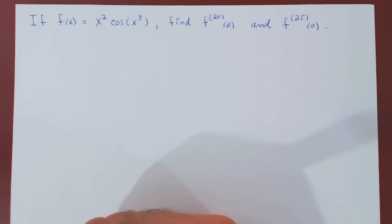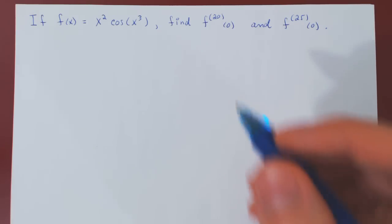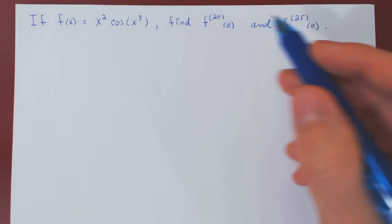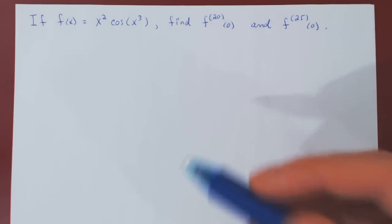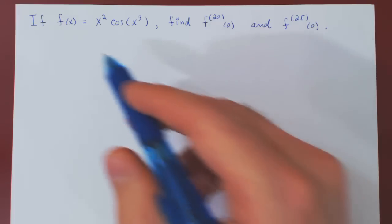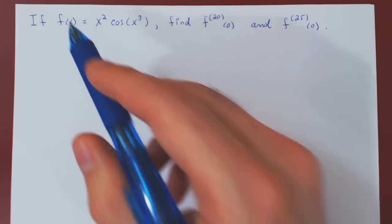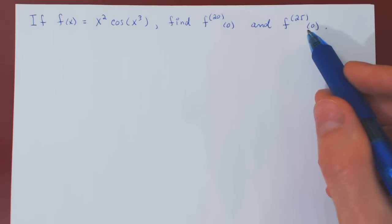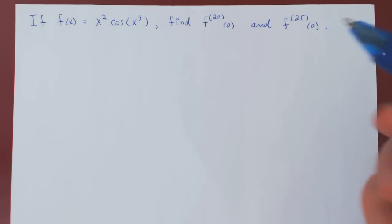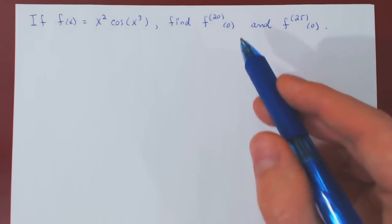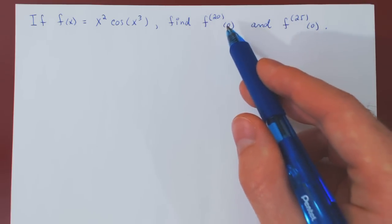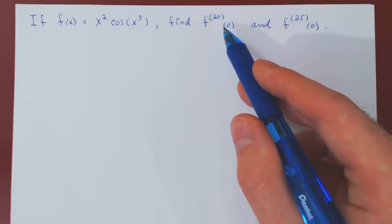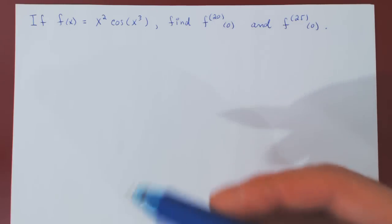In this video, we will see how we can use Maclaurin series to evaluate higher derivatives of a function at 0. If we wanted higher derivatives of a given function at a different point other than 0, instead of the Maclaurin series, we would use the Taylor series of the function centered at the point of interest.